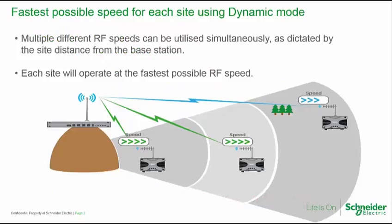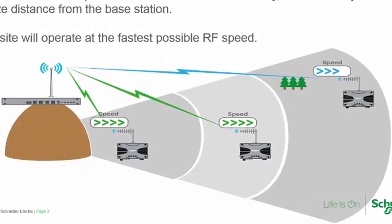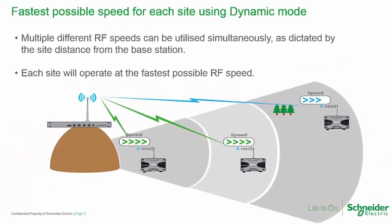With each radio able to adjust its speed dynamically, the system can typically operate more quickly in normal operation. Even though the faster speeds may not provide a 20 dB fade margin, the system remains reliable because each radio will automatically reduce its speed whenever necessary to maintain reliability. Some remotes may need to typically operate at slower speeds, as they are at a greater distance or the path may be more heavily obstructed. At the same time, other sites will operate at faster data rates, as dictated by their own conditions.